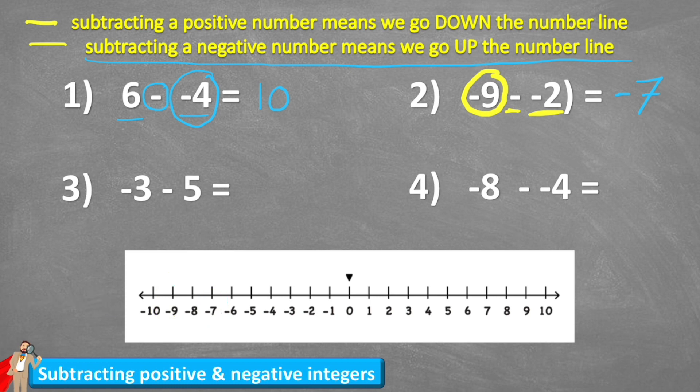Let's have a look at question three. Question three says I have negative three and I am subtracting five. So I'm on negative three and I am subtracting this time a positive number. So we follow the first rule. Subtracting a positive number means we go down the number line because essentially all I'm doing is subtracting another five. So I'm at negative three. Subtract five is one, two, three, four, five, leaves me on negative eight. So negative three minus five is negative eight.